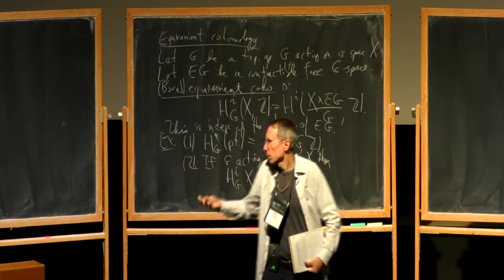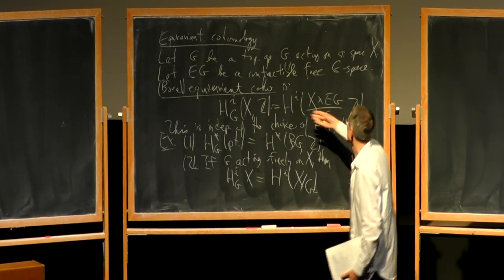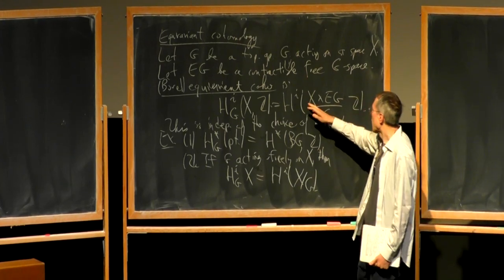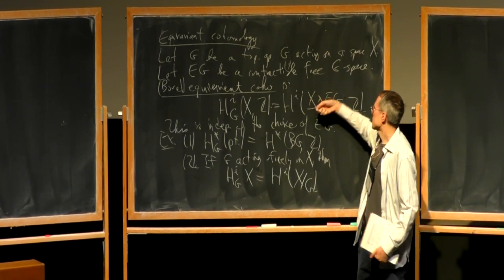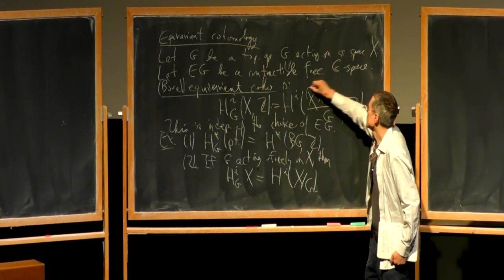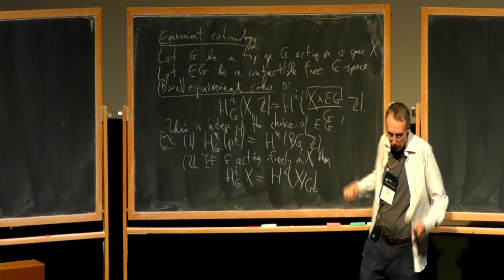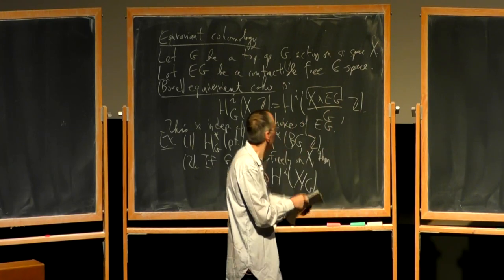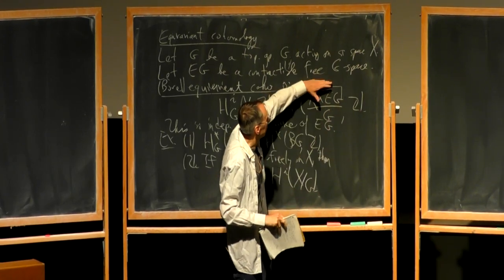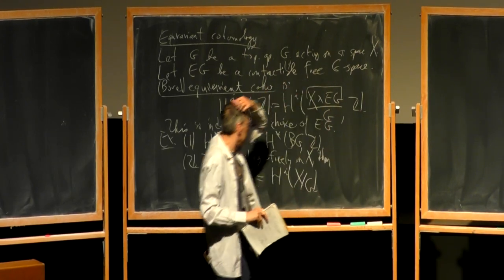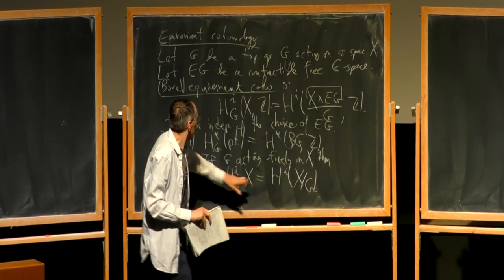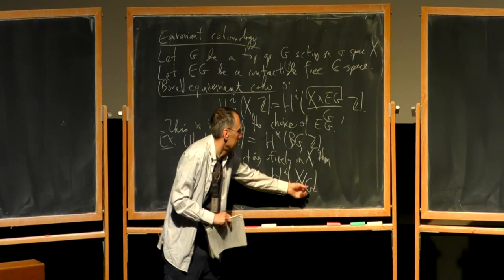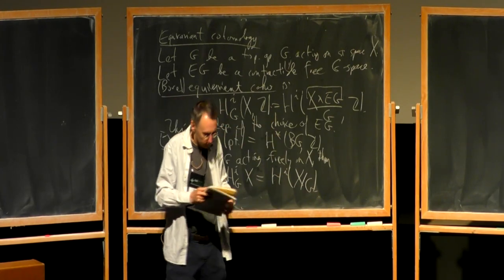In short, what the Borel construction does is modify X to get something homotopy equivalent to X, but now in such a way that G acts freely on it. If G was already acting freely, then this modification doesn't make any difference.